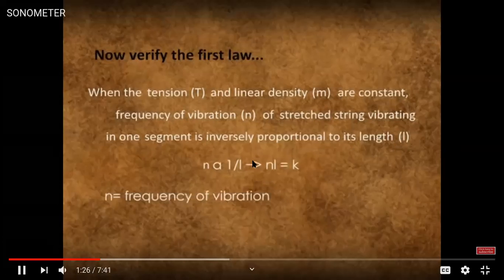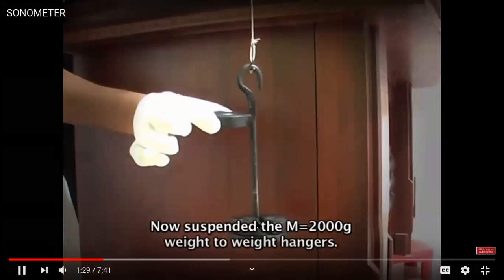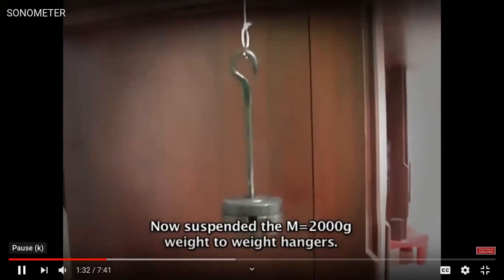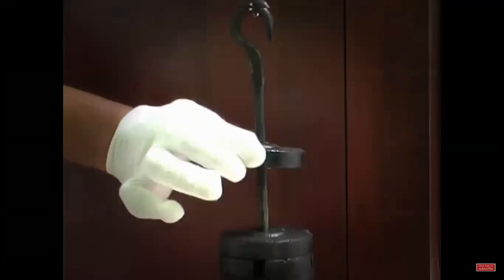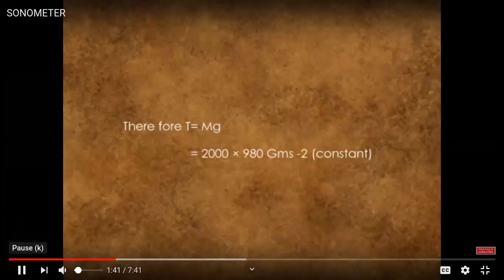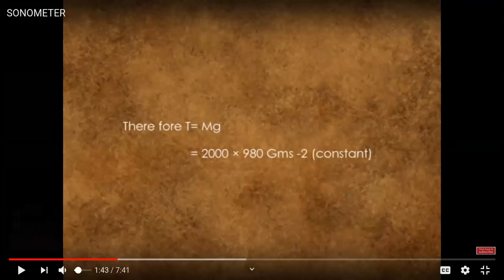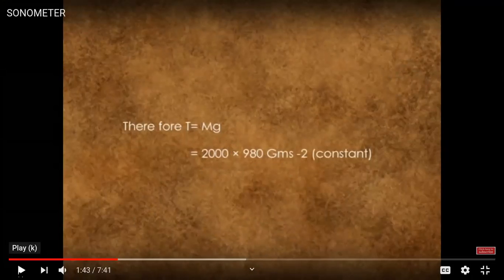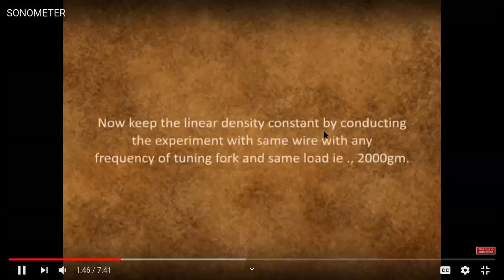So this is the first law — frequency is inversely proportional to the length of the string. The tension T is the weight of the weights on the hanger: T equals mass times g. In SI units, g is 9.8; in CGS units, g is 980. You start by adding weights — for example, 2 kg multiplied by 9.8 gives the tension in SI units.